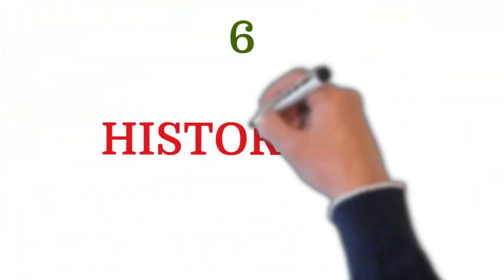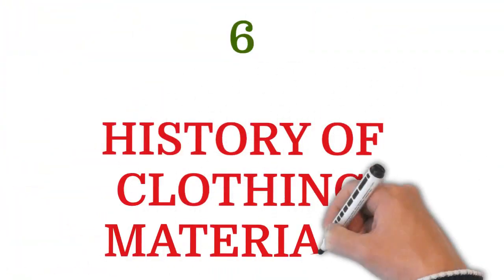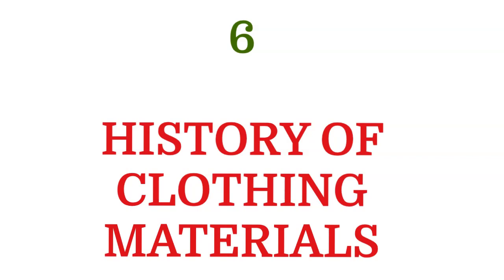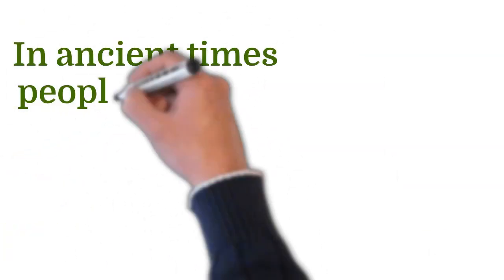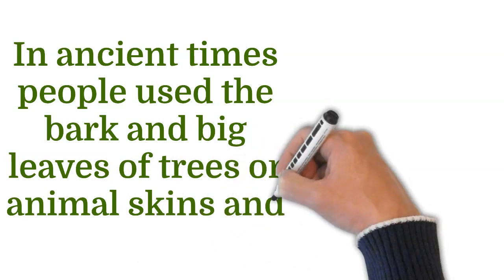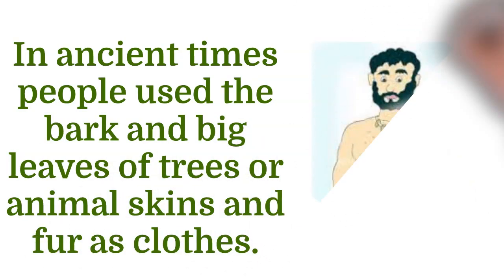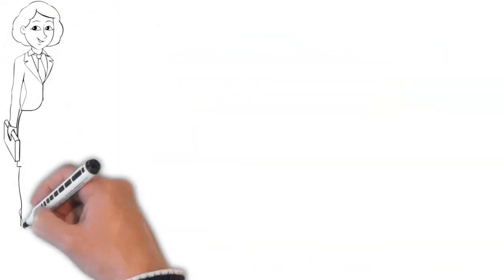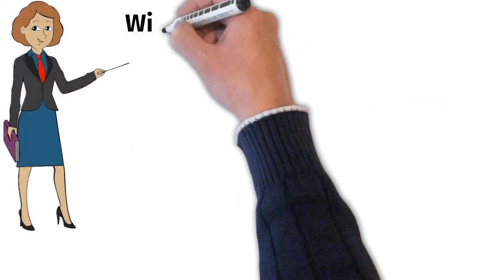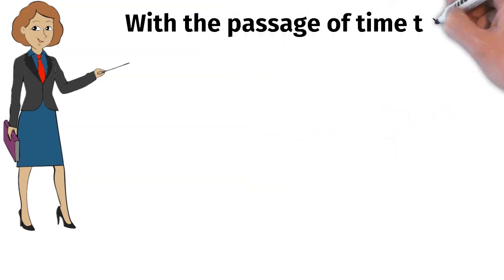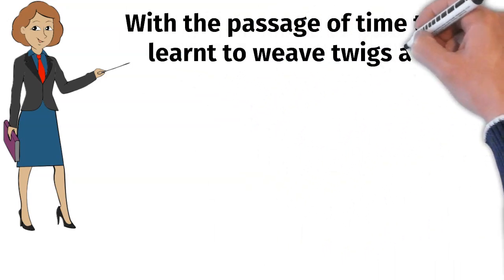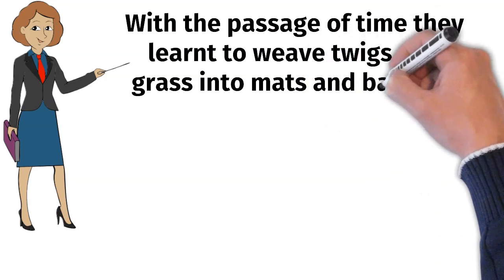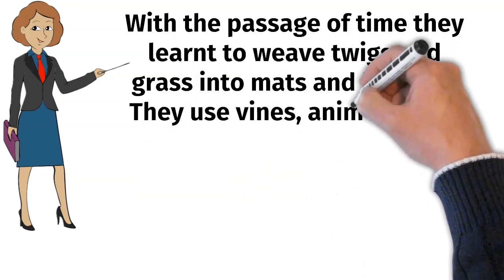Next is History of Clothing Materials. In ancient times, people used the bark and big leaves of trees or animal skins and fur as cloths. With the passage of time, they learned to weave twigs and grass into mats and baskets. They used vines, animal fleece or hair to make fabrics.